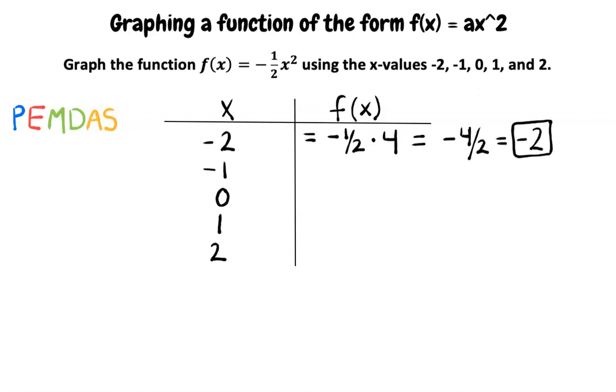Why don't you give the next one a try? So, substituting -1 for x, I get -1/2 times (-1)². Following the order of operations, I need to calculate the exponent before I multiply by -1/2, right? Correct!